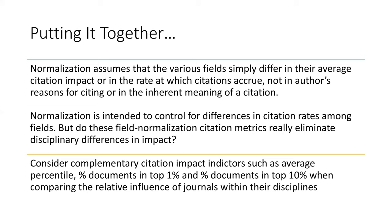Some people prefer comparing the relative influence of journals within their disciplines in a more straightforward way, such as converting each unadjusted citation score to a percentile rank or a standardized score. So when thinking about citation normalization, we need to take fields or disciplines, time, and document types into consideration.